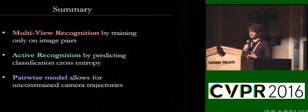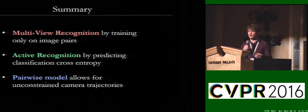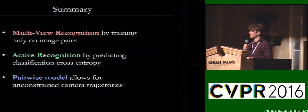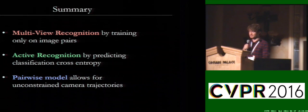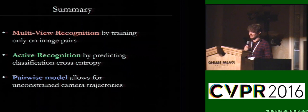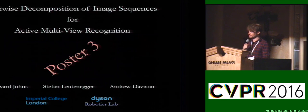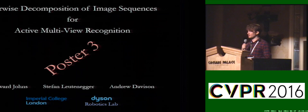To summarize, we propose a new method for multi-view recognition that trains only on image pairs. We extend this to an active recognition framework by predicting the cross-entropy of the pairwise classifier. Our decomposition of each sequence into a set of image pairs allows for tractable training with unconstrained trajectories. Come and chat at poster 3 if you'd like to find out more. Thanks very much for listening.